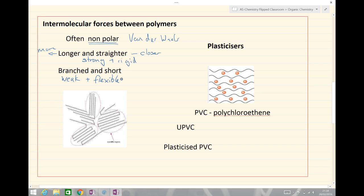We may find some useful properties for that and we're going to have a look at an example with polychloroethene. So long and straight gives us strong and rigid, whereas branched and short we end up with a weak and flexible polymer.